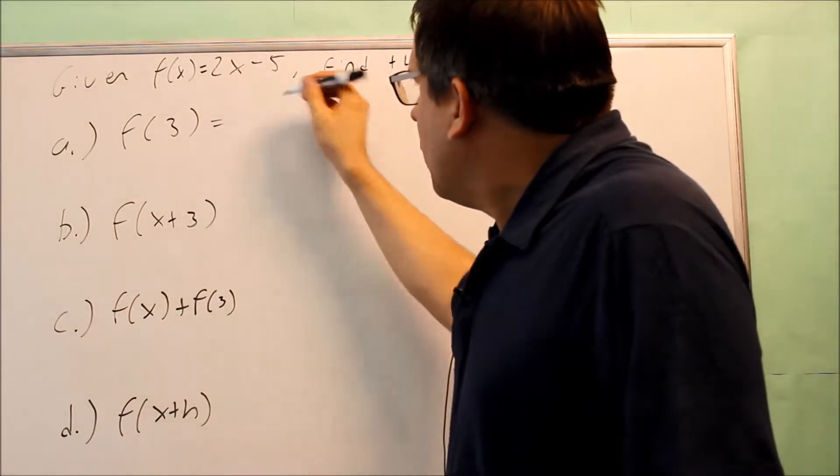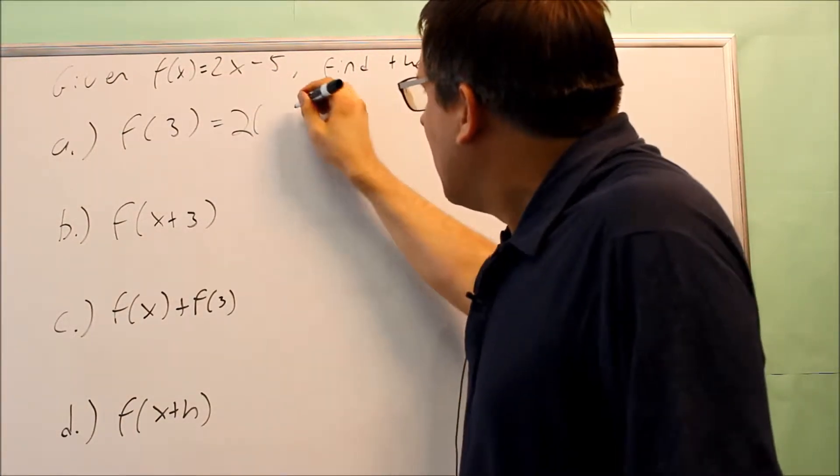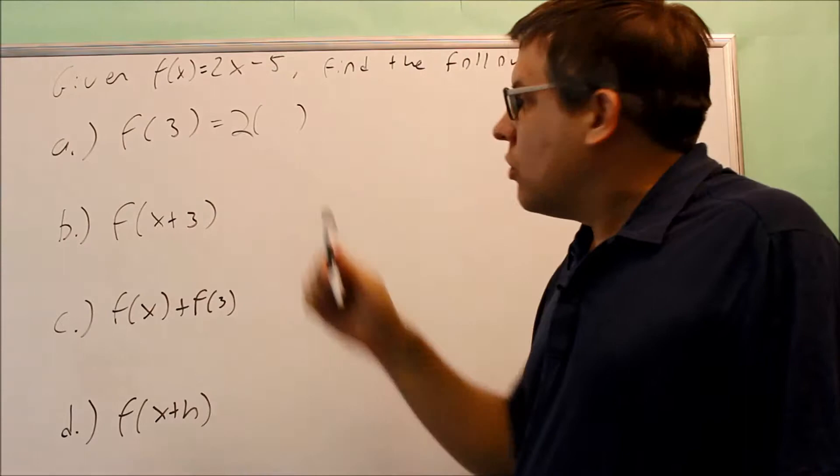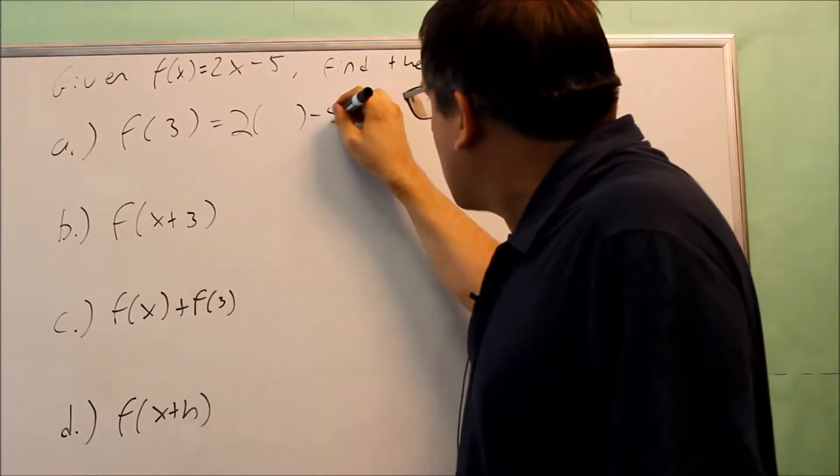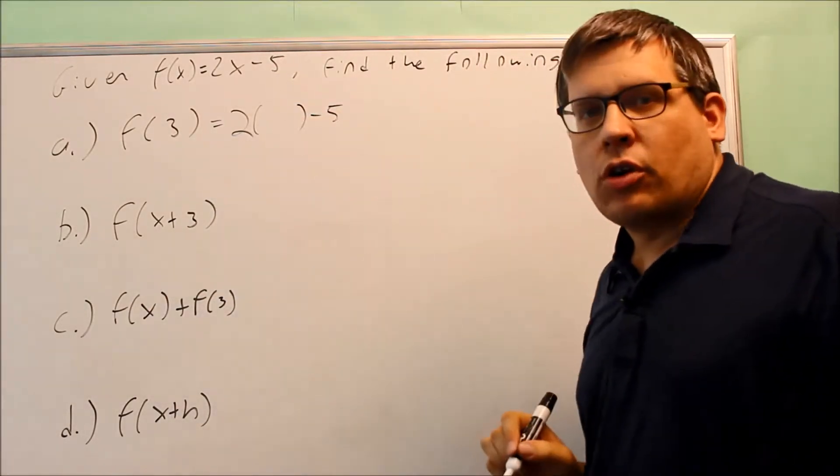So to do that one, you have 2, and then instead of the x, I'm going to go ahead and write a blank there, and we also have minus 5. That's our template that we're going to use.